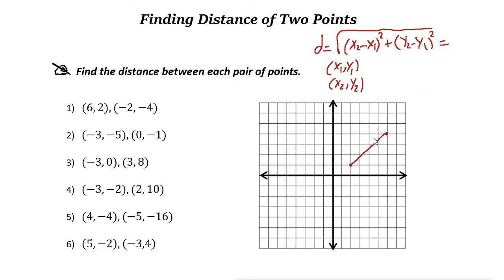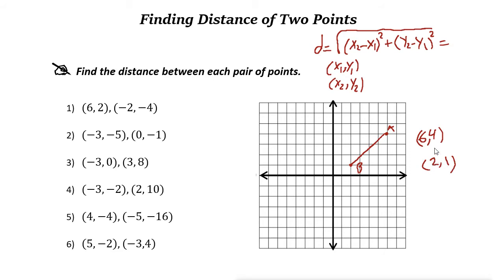Now let's try these two points. Let's call this point A and this one B. The coordinate of point A is x equals 6 and y equals 4. For point B, x is 2 and y is 1. So we have these two points A(6, 4) and B(2, 1).